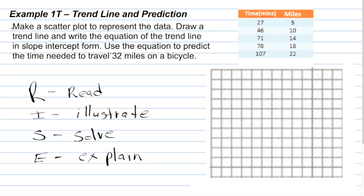So, first we're going to read the problem. It asks us to make a scatter plot to represent the data, draw a trend line, and write the equation of the trend line in slope-intercept form. Use the equation to predict the time needed to travel 32 miles on a bicycle. Well, first, let's re-read the problem and identify what we need to do. We need to make a scatter plot to represent the data. That's the first thing we're going to do. The second thing we're going to do is draw a trend line. The third thing we'll do, write the equation of the trend line in slope-intercept form. And finally, the fourth thing we have to do is use the equation to predict the time needed to travel 32 miles on a bicycle.